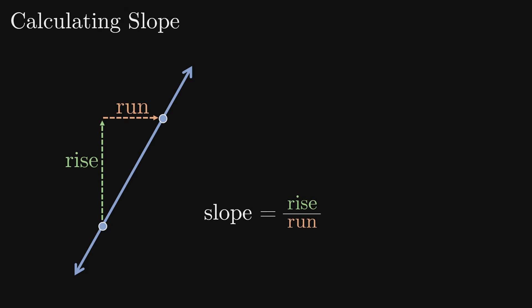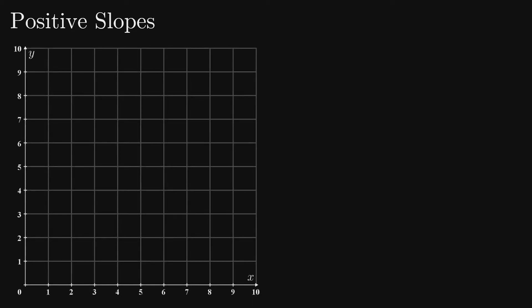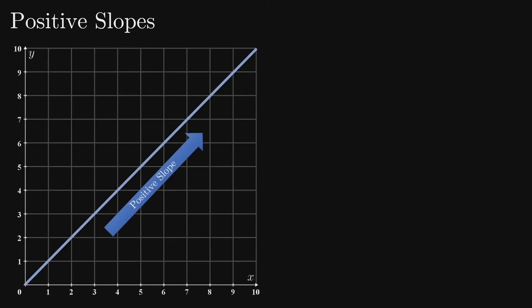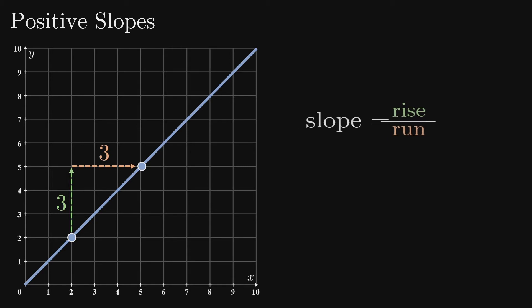Let's take a closer look at slope values, starting with lines that have positive slopes. These lines increase or go up from left to right. The larger that the rise is, relative to the run, the greater the slope.